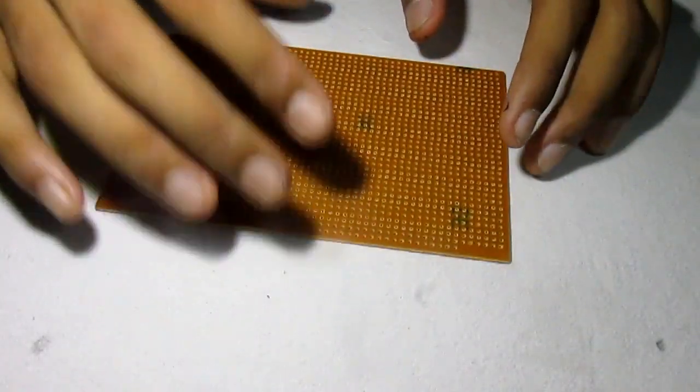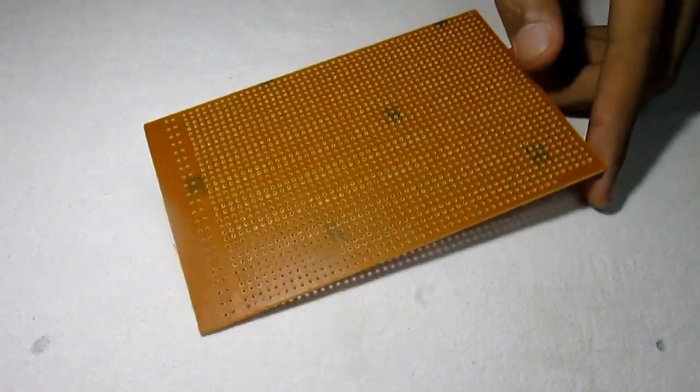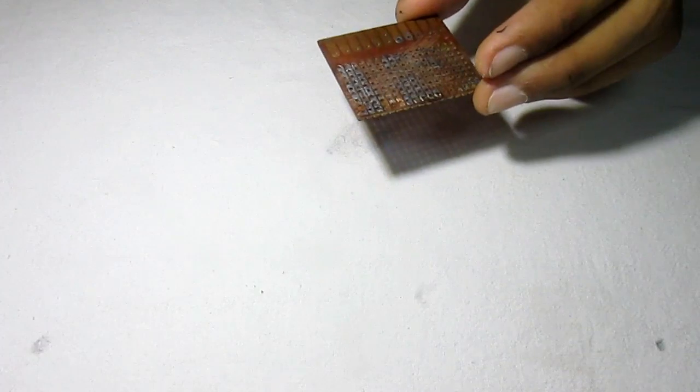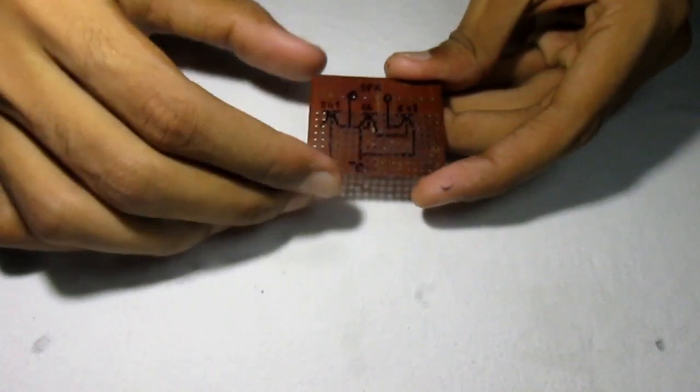The components for the electronics part are a prototyping board or a vero board. Cut the vero board into a smaller size and draw the socket which I've provided in the description onto the smaller vero board. It therefore becomes easier for us to make the circuit.